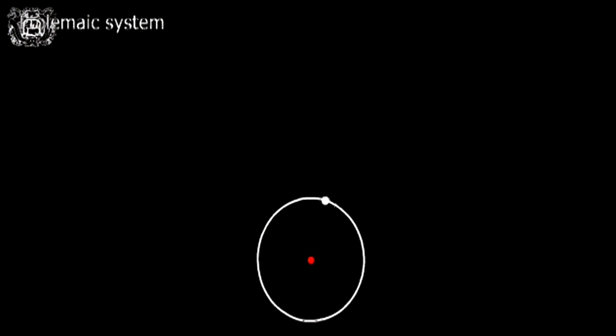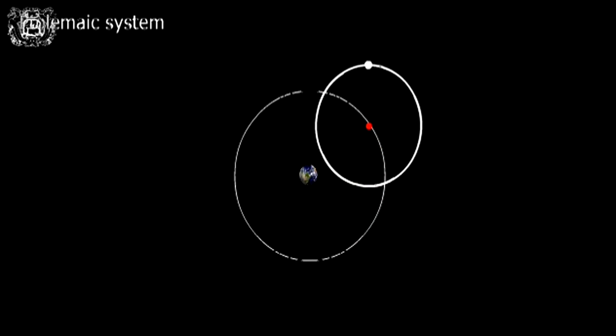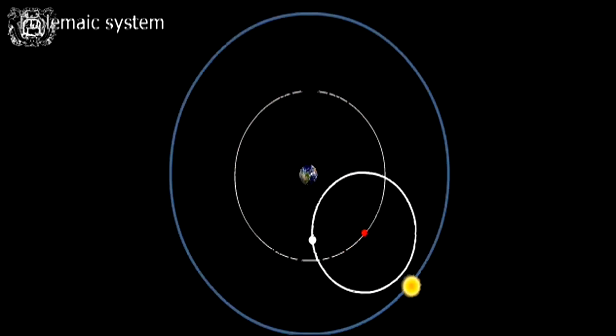In the Ptolemaic system, in fact, each planet moved in a circle, the epicycle, whose centre rotated in a larger circle, called deferent, around the Earth, immobile at the centre of the universe.